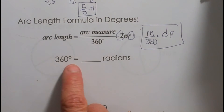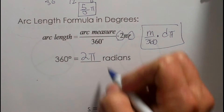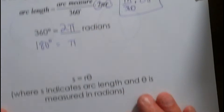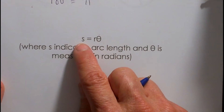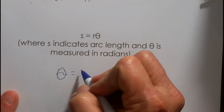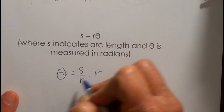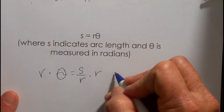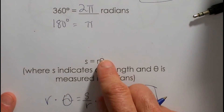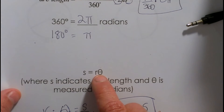360 degrees — a whole circle — is 2 pi radians, which also means 180 degrees equals pi radians. In the last lesson, theta in radians was found by taking arc length divided by the radius. If you want to isolate S, the arc length, multiply both sides by r, and you get radius times theta equals arc length. So arc length S equals radius r times central angle theta, but theta must be in radians.